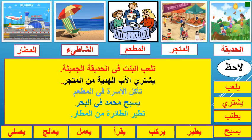From these pictures we learn new words. First one: al-hadiqa — the garden or the park. Al-matjar — the mall or the supermarket. Al-mata'am — the restaurant.